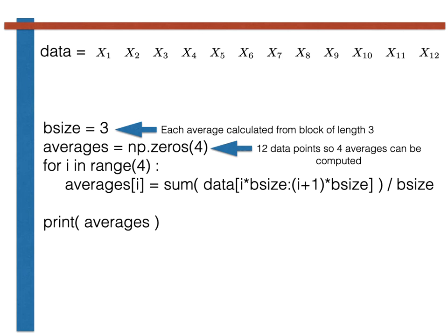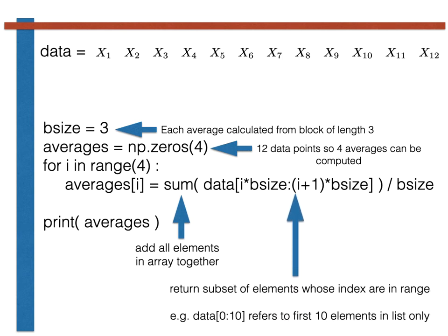Having set up these variables, we can now write a loop to compute the four averages. Within this loop I've used a few Python tricks you perhaps haven't seen before. First, I've used the sum command, which adds up all the elements in the numpy array passed to it. In addition, I've used this command to get the particular subset from the array data needed to calculate the block average.